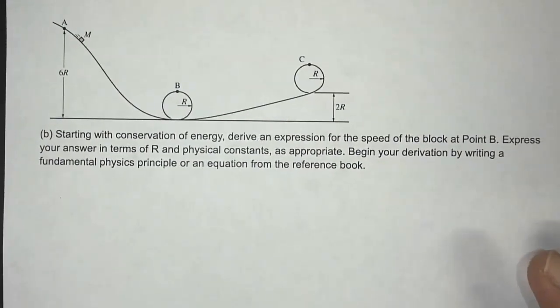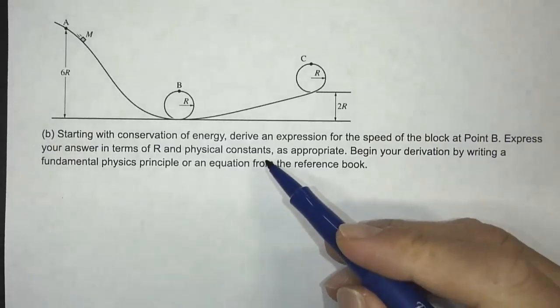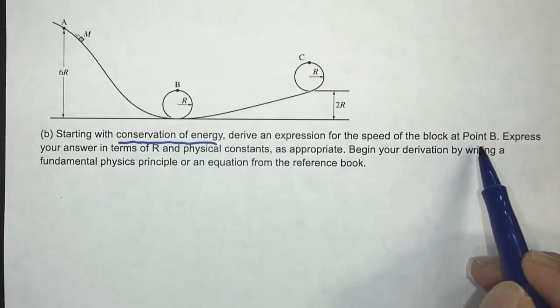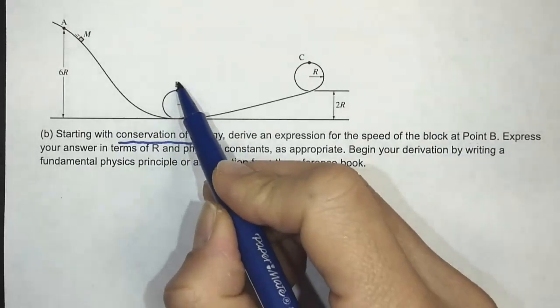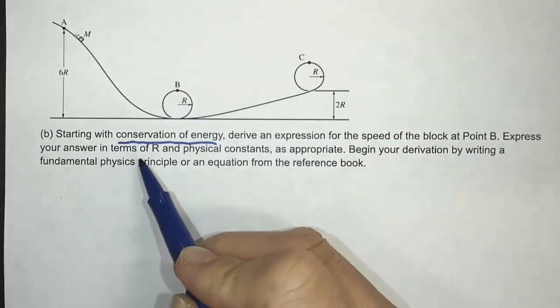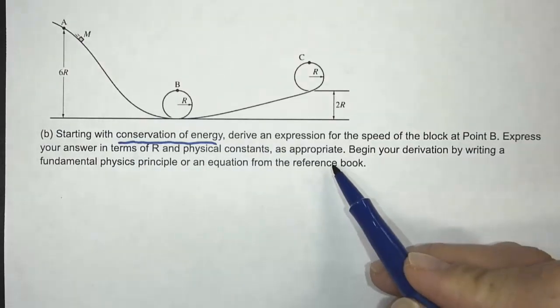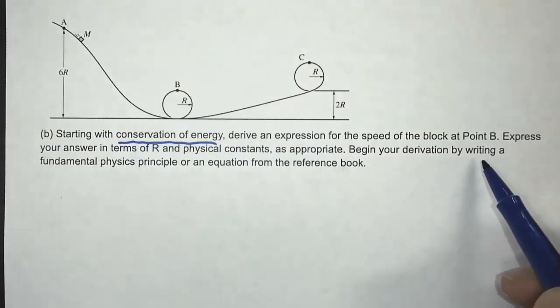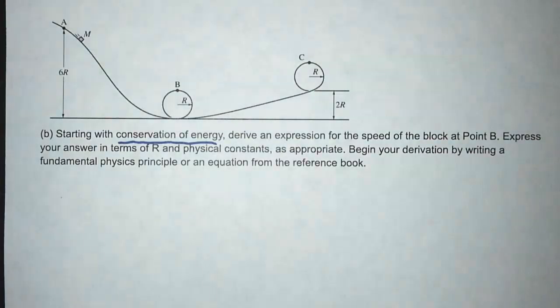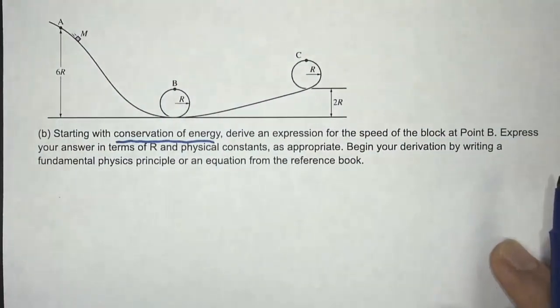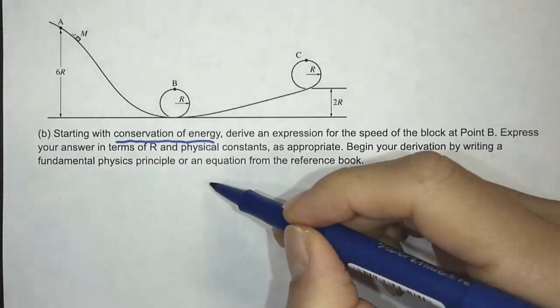The next part of the question, part B, starting with conservation of energy, derive an expression for the speed of the block at point B. So that's this location right there. Express your answer in terms of R and physical constants as appropriate. Begin your derivation by writing a fundamental physics principle or an equation from the reference book. They gave us a clue here: conservation of energy.